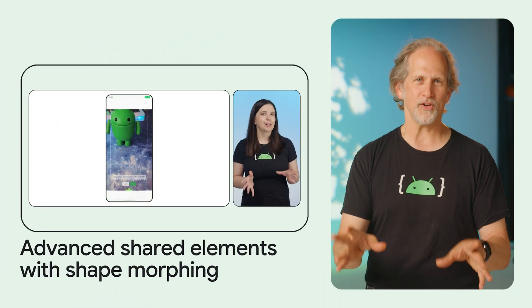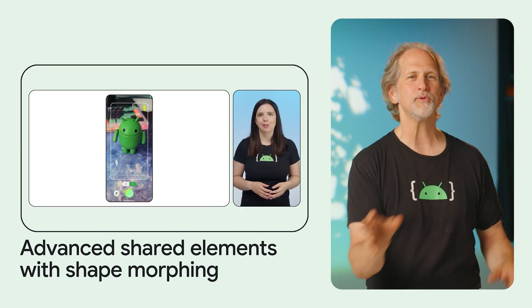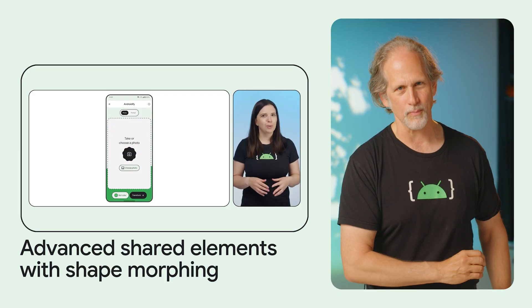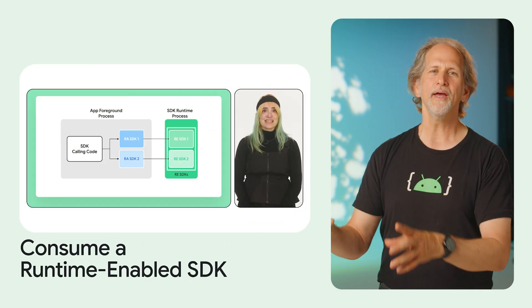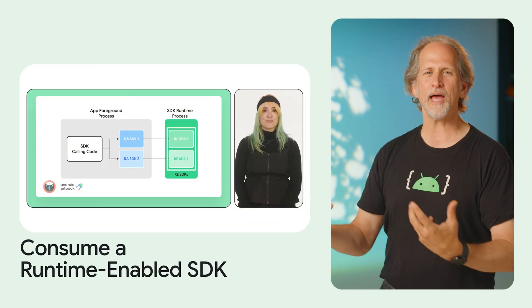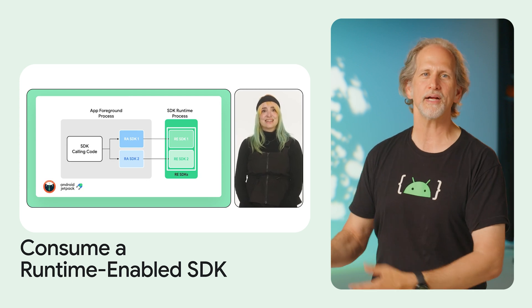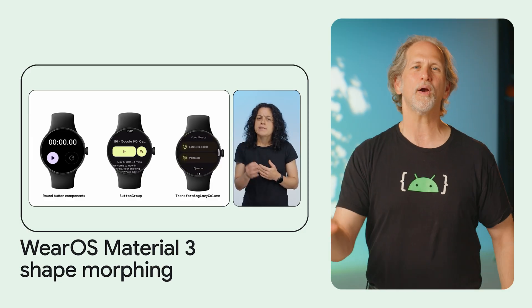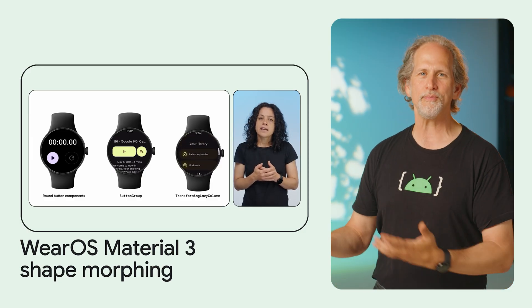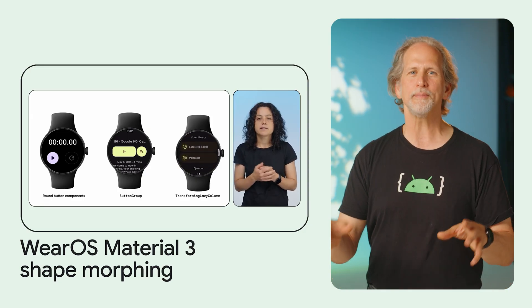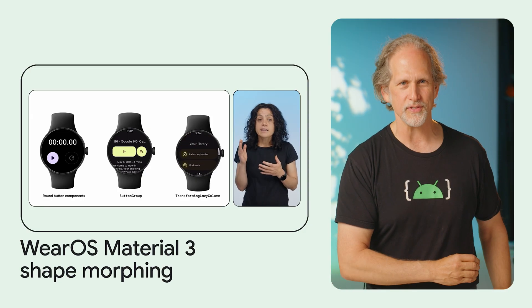Rebecca covered how Androidify achieved its transition between the photo button and the camera screen in advanced shared elements with shape morphing. Zoe covered how to consume a runtime-enabled SDK, explaining how runtime-enabled SDKs execute in the sandbox, how you can load them, and how to render their UI. In Wear OS Material 3 shape morphing, Kiara demonstrated how to add animated shape changes in Jetpack Compose to buttons and button groups, along with vertically scrolling lists where items scale and morph as they approach the screen edges.